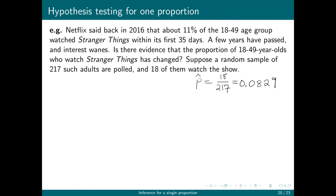We need to first state our hypotheses. The null hypothesis is the original claimed value of the proportion, so we're going to say that p is equal to 0.11. That 0.11 is the number we're calling p-naught. Our alternative hypothesis — notice that we want evidence that the proportion has changed, not that it's increased, not that it's decreased, just that it's not 11% anymore. So our alternative hypothesis is that the true proportion is not 11%.